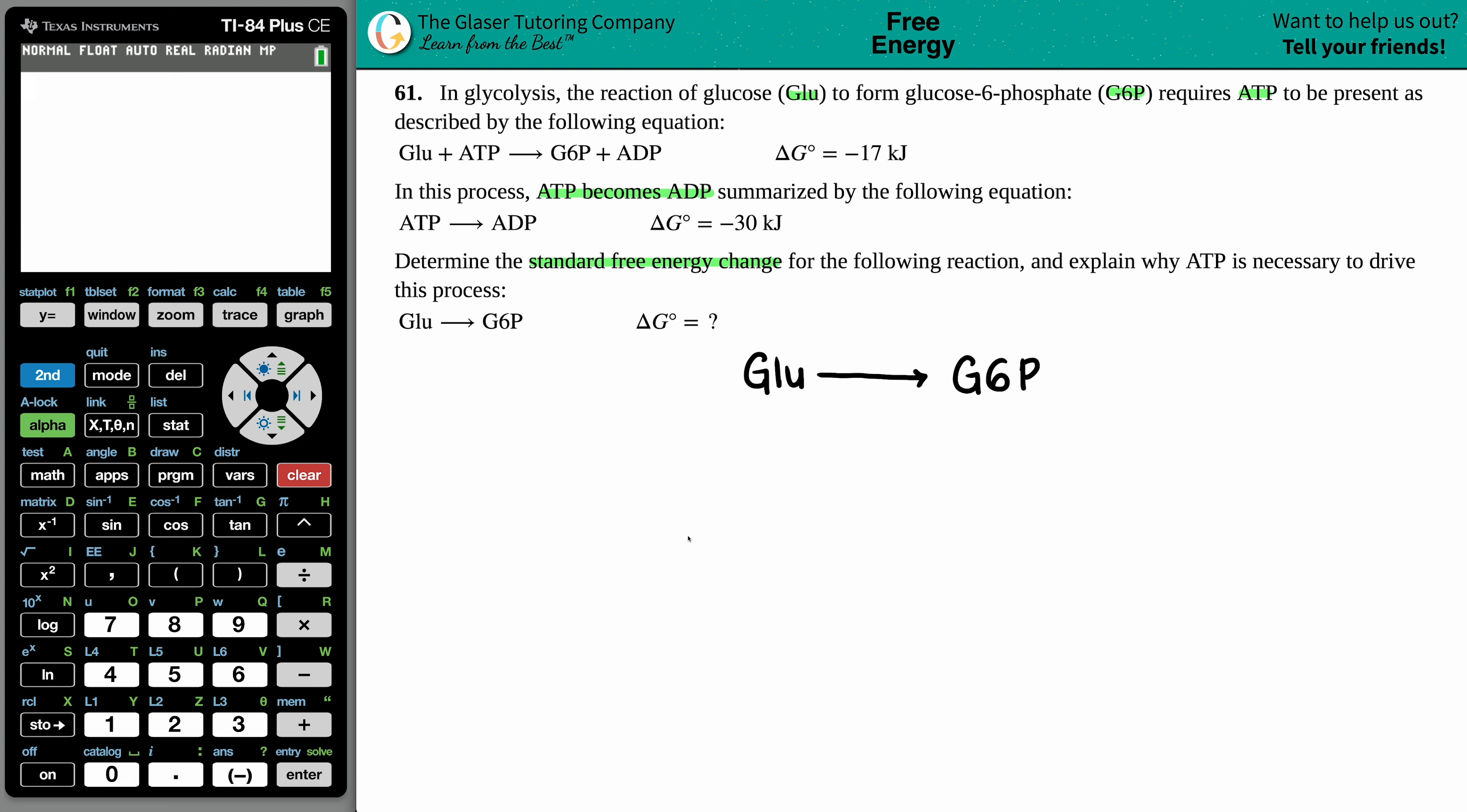So I'm just going to replicate the first equation: glucose plus ATP yields G6P plus ADP. And the delta G notch for this is spontaneous because it's negative, so negative 17 kilojoules.